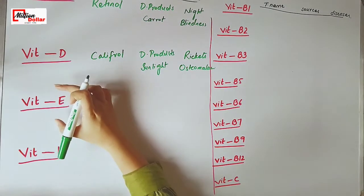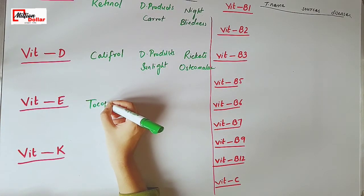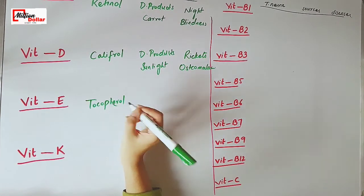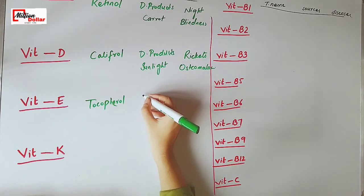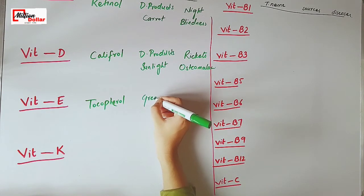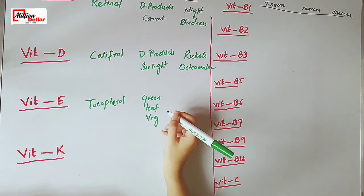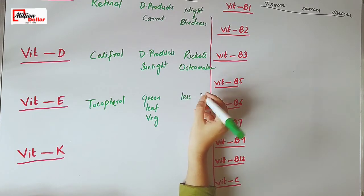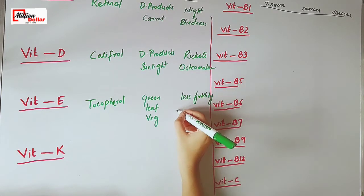The technical name of vitamin E is tocopherol. The sources of vitamin E are green leaf vegetables. The diseases caused by the deficiency of vitamin E are less fertility and muscle weakness.